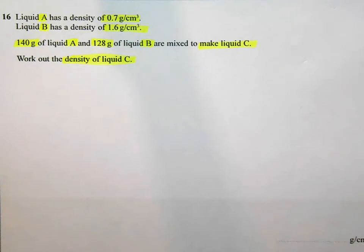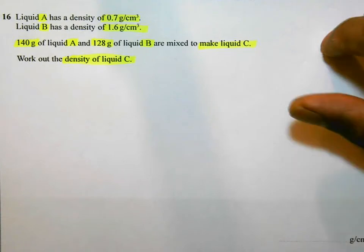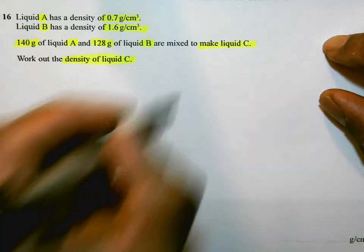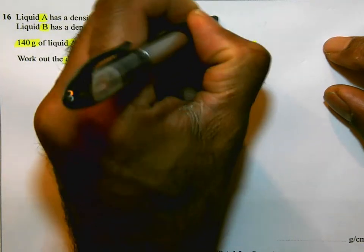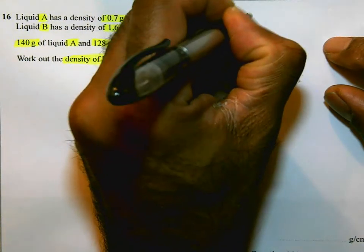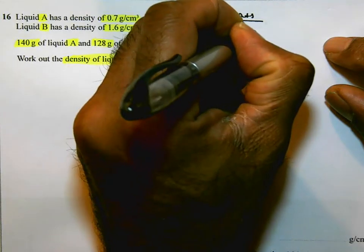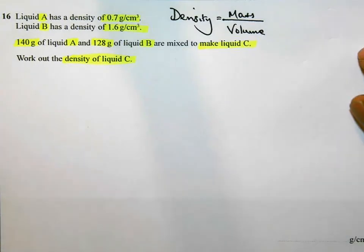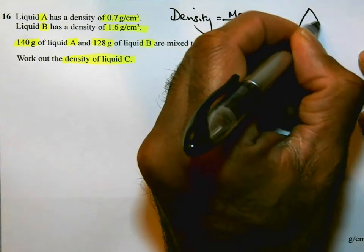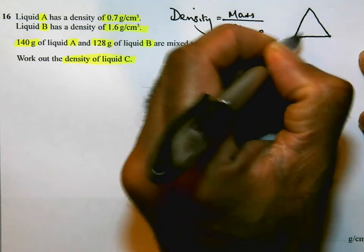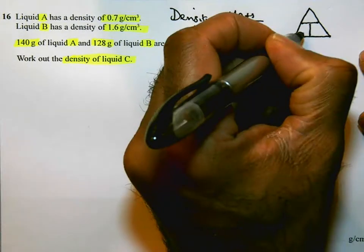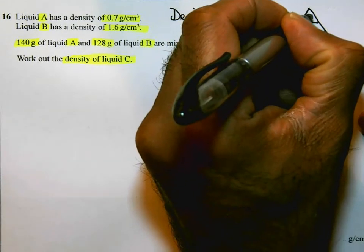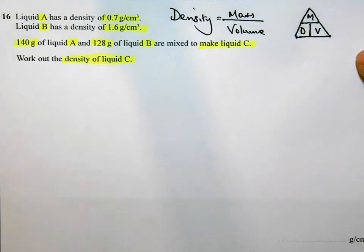The word density is used several times in this question. You need to make sure you understand and know what density means. Density is mass divided by volume, and you might have a density triangle which helps you with this. This is one that you should know. Density is mass over volume. So this helps you to work out any of the missing ones.